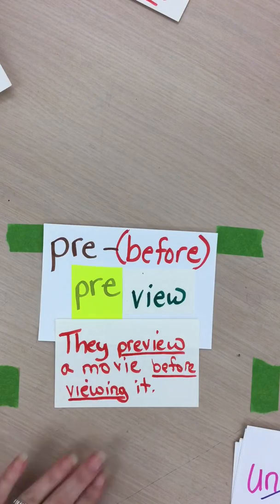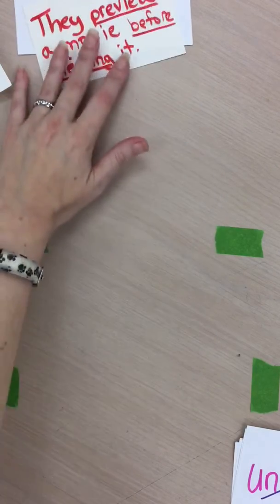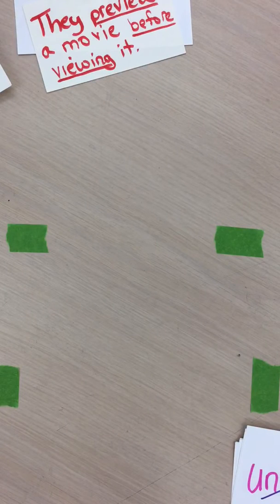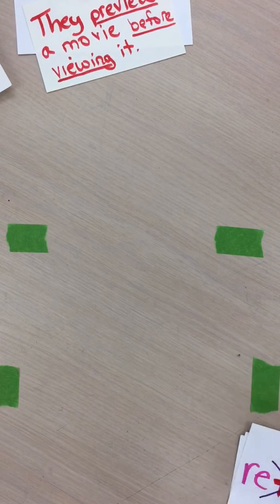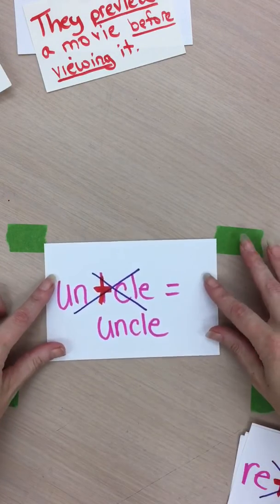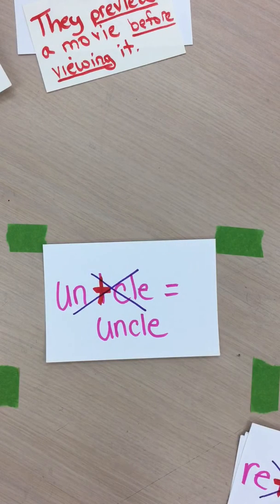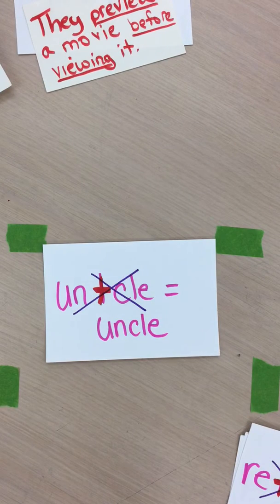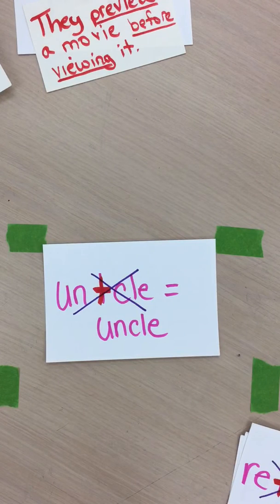But watch out boys and girls — prefixes sometimes have look-alikes. Some words contain the same string of letters as a prefix, but when you look closer you'll find that they are not prefixes. Let's look at an example. Here we have the word uncle. Uncle begins with un, but cle is not a word, so this is a look-alike.